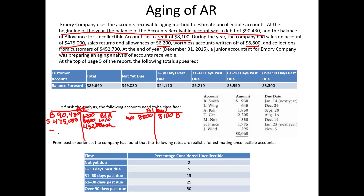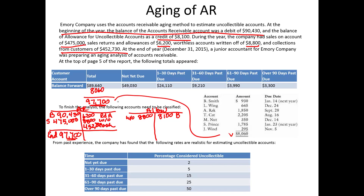At the end of the year, we're performing an analysis of accounts receivable. But first, what would be the ending balance in accounts receivable? Based on the math, it would be $97,700. So when we age the accounts, they should also come to $97,700. So far we've done an analysis of $89,640, and we still need to age $8,060 of accounts receivable — and when we do that aging, the total comes to $97,700.